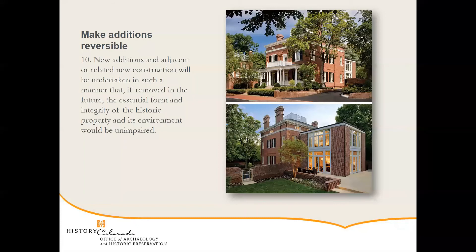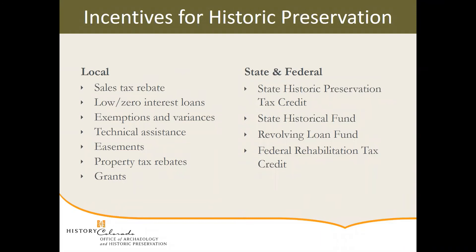Number ten is to make additions reversible. If you have to remove the addition in the future, you want to make sure you've still retained the integrity of the historic property and that it's not ruined beyond repair. For example, if you were going to add a second floor to a house, that would irreparably change it. But if you're adding an addition to the rear, as we can see in this example, you can make the entrance through an existing window or door, so if you were to take off that addition at some point, all you'd have to do is put that door back. That is the fastest I've ever gone through those standards, but hopefully that gives you a nice taste of what to expect if you ever have to go through the design review process.